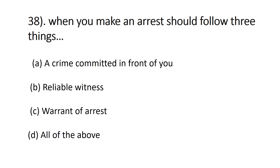Question number thirty-eight: when you make an arrest, you should follow three things — A) crime committed in front of you, B) reliable witnesses, C) warrant of arrest. The correct answer is D, all three, because you must know the crime was committed by that person, have reliable witnesses, and have an arrest order.